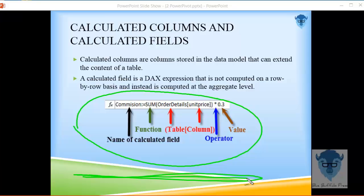Then I have some kind of an operator, in this case multiplication times point oh three. So we're going to sum up the unit price column from the orders detail. We're moving up and down in unit price of that orders details table. And then we multiply it times point oh three. That's the commission.